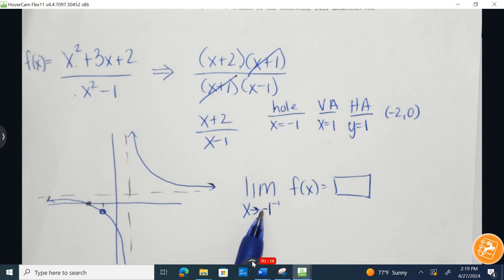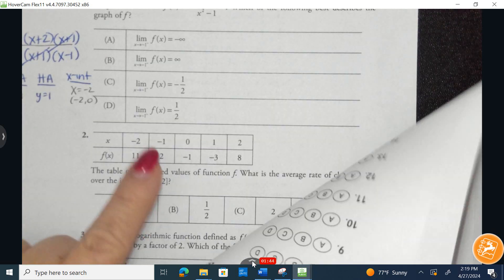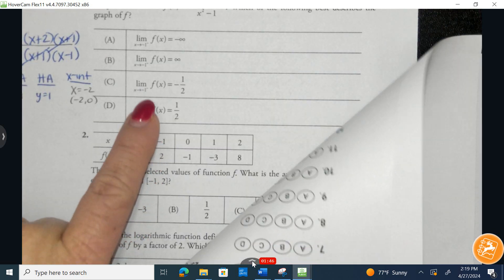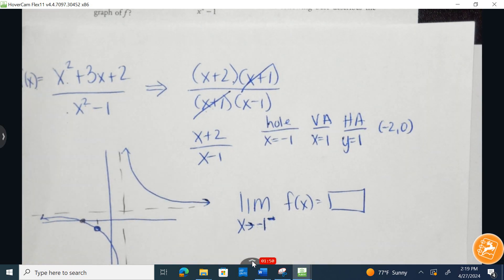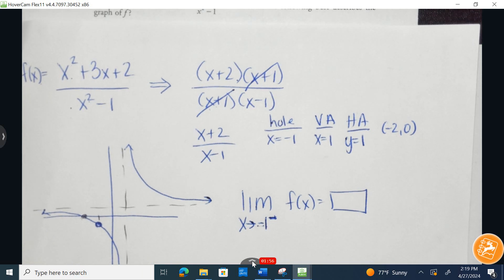This means when we approach negative 1 from the left-hand side, notice how there's a little negative sign here to the right of the negative 1, just a negative sign. When we approach negative 1 from the left-hand side, what value are we approaching? Well, here's how you can figure that out.